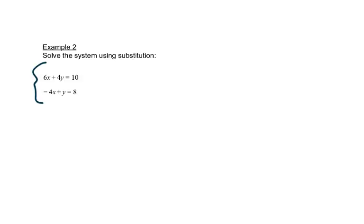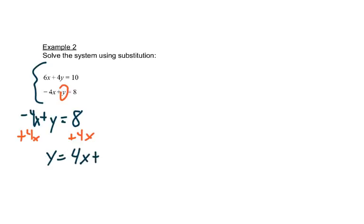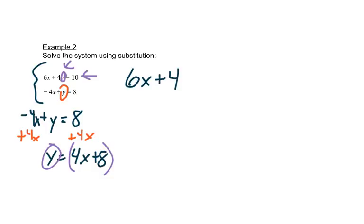Let's look at another system. Here we don't have something already by itself, so we look at both equations for a letter that does not have a number in front of it. There's no number in front of that y, so we're going to get y by itself in that equation. Writing 4x plus y, we add 4x to both sides and get y equals 4x plus 8. Now I go to the other equation and in place of y I put 4x plus 8, giving 6x plus (4x plus 8) equals 10.